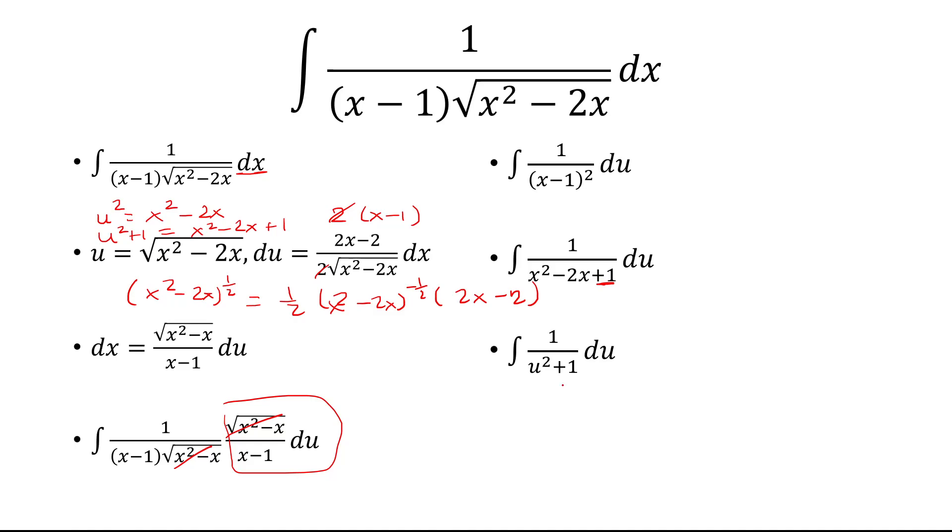Which, if I take the antiderivative of this, that's just going to be the inverse tangent of u plus c. And u, we said, is the square root of x squared minus 2x.